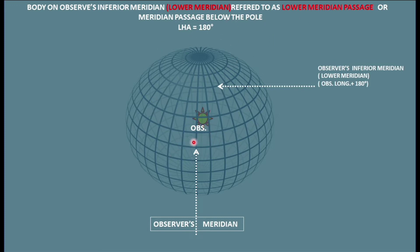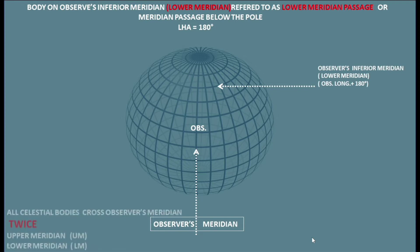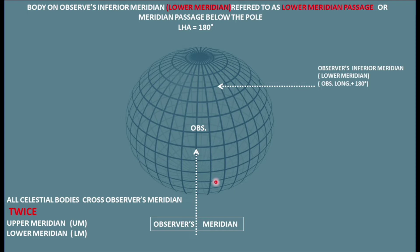At that time, the LHA is 180. LHA is measured from the observer's meridian to the body westward, so now it is making an angle of 180. LHA would be 180 degrees when the body is on the observer's inferior meridian, or when the body is at its lower meridian passage. The body continues and next day it is going to rise again and culminate on the observer's meridian. So the celestial body has crossed the meridian twice — once on the upper meridian and once at the lower meridian.